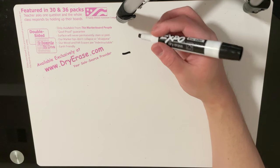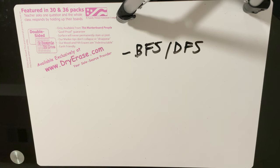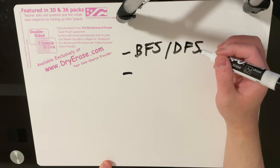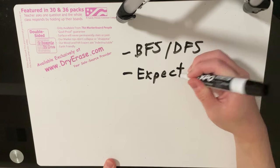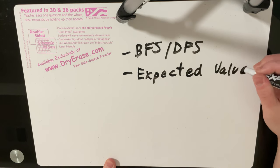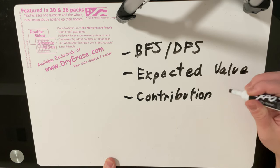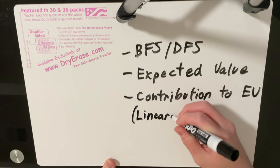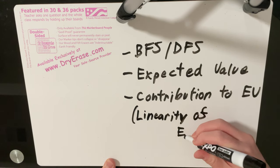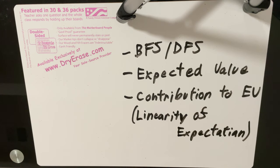Because this is a tree problem, you obviously want to be familiar with BFS and DFS. If you don't know what those mean, definitely look that up first before you even attempt this problem. You also want to be familiar with expected value — more specifically, contribution to expected value, which some people refer to as linearity of expectation. If you don't know what expected value is, I'll put some tutorials in the description, because if you don't know expected value, you likely won't be able to follow this explanation.